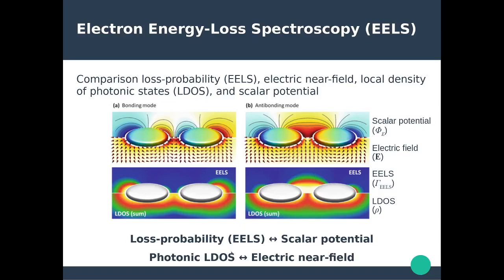The key takeaway is that the loss probability is more correlated to the scalar electric potential, while the electric field is more correlated to the local density of optical states. Therefore, experimentally, people doing EELS cannot necessarily compare one-to-one with local electric field distributions. Although there is some type of relationship, it is not a direct correlation.